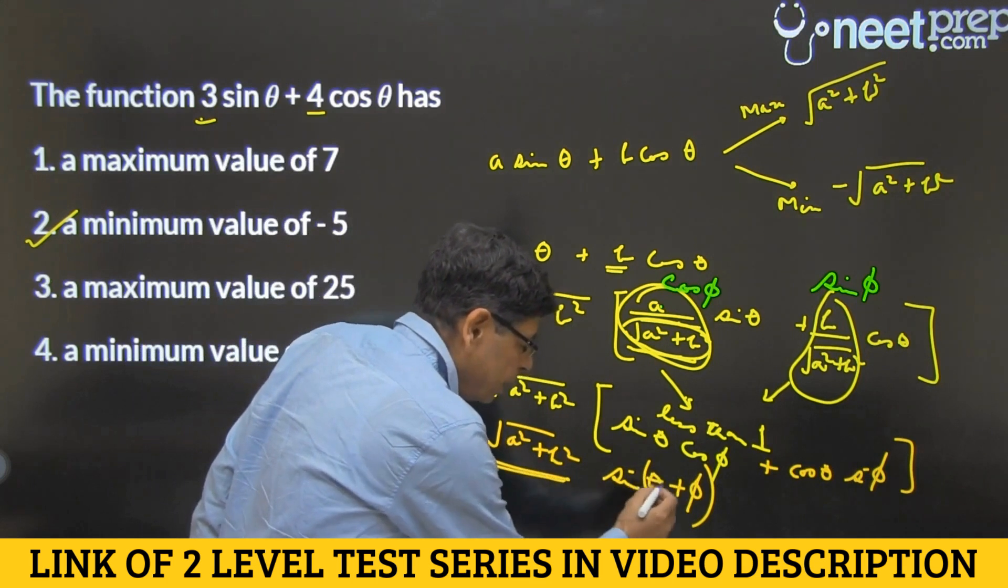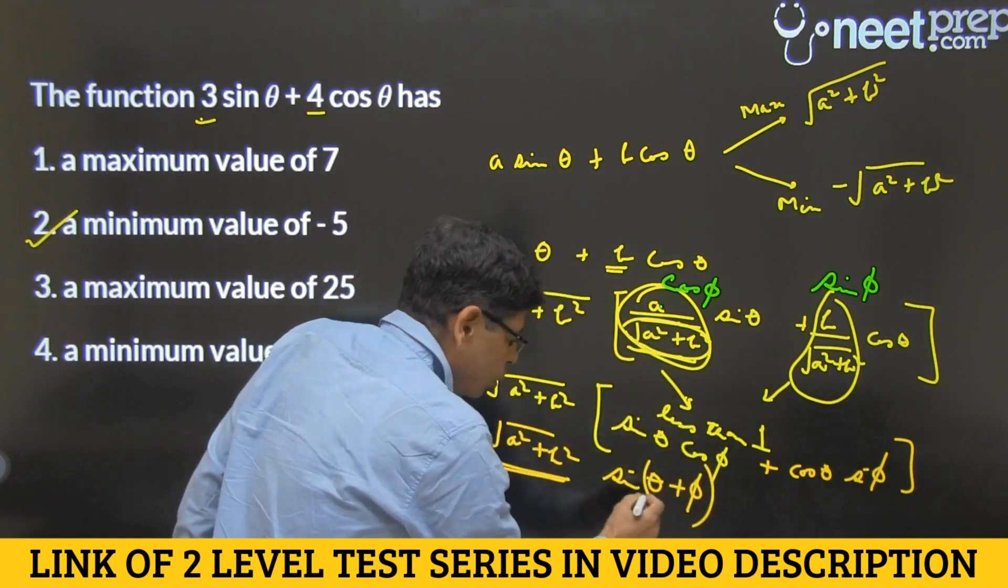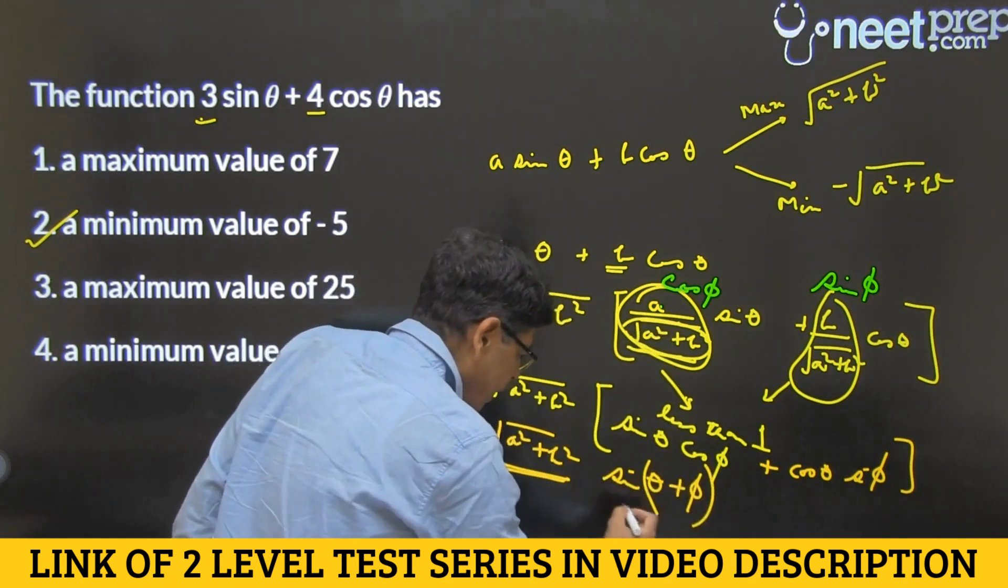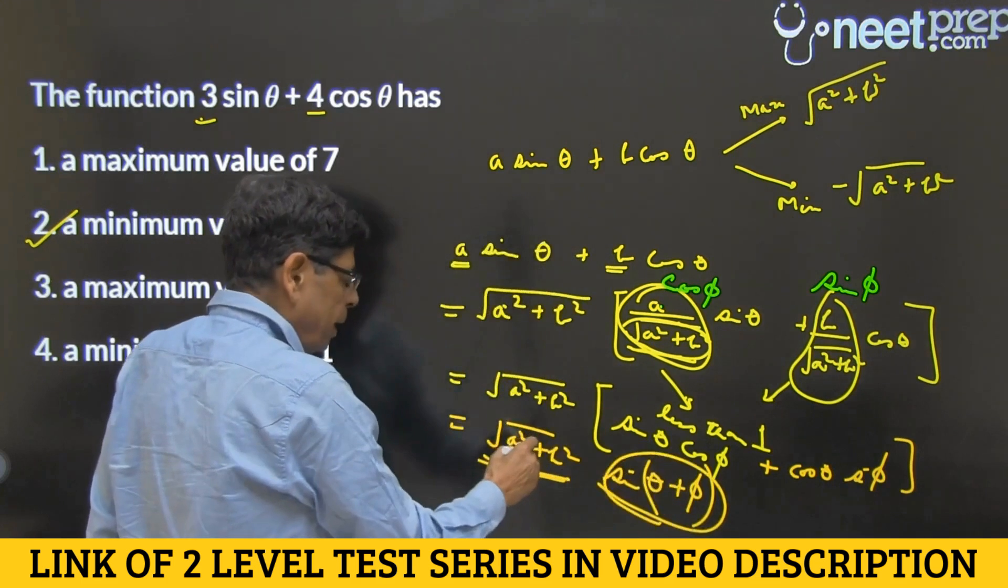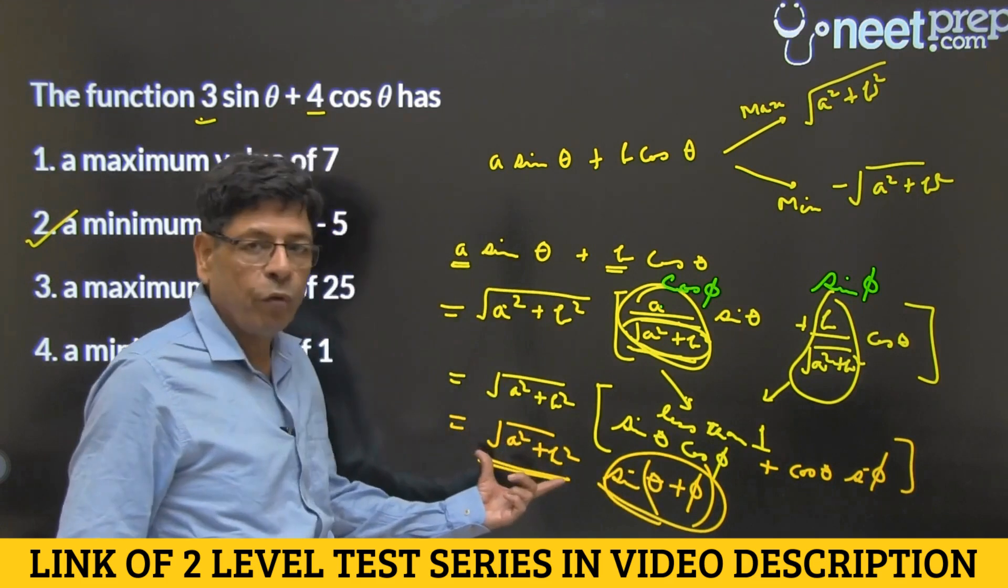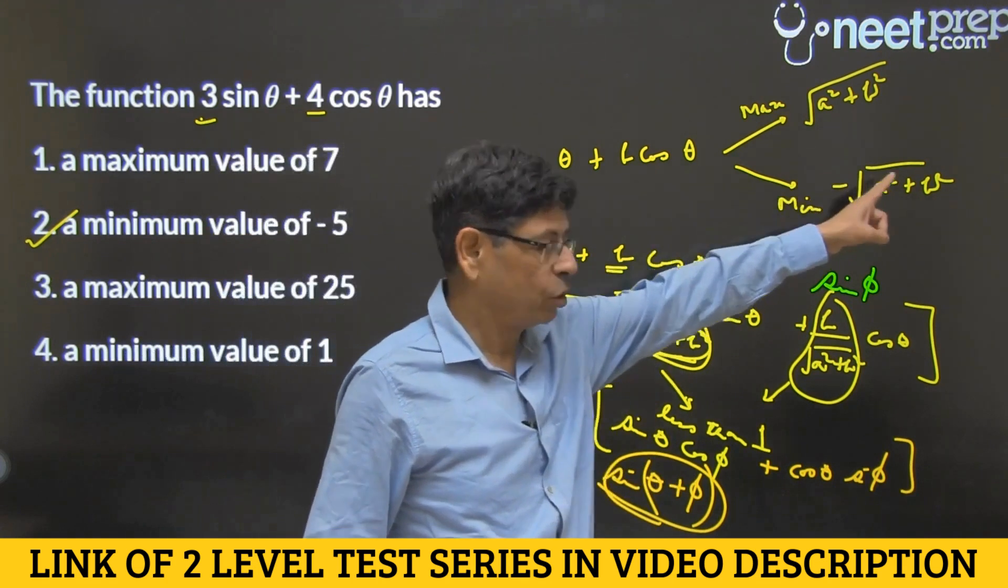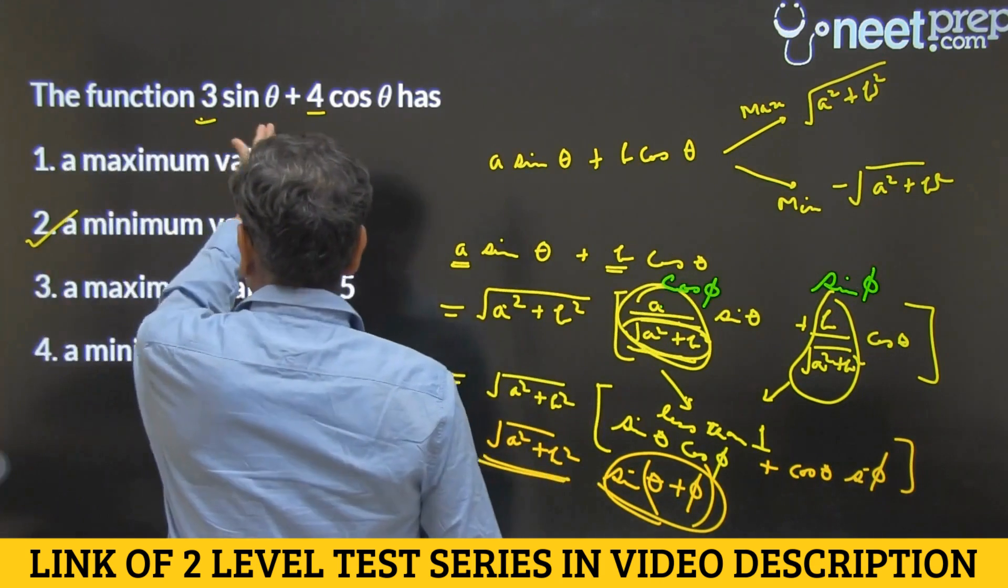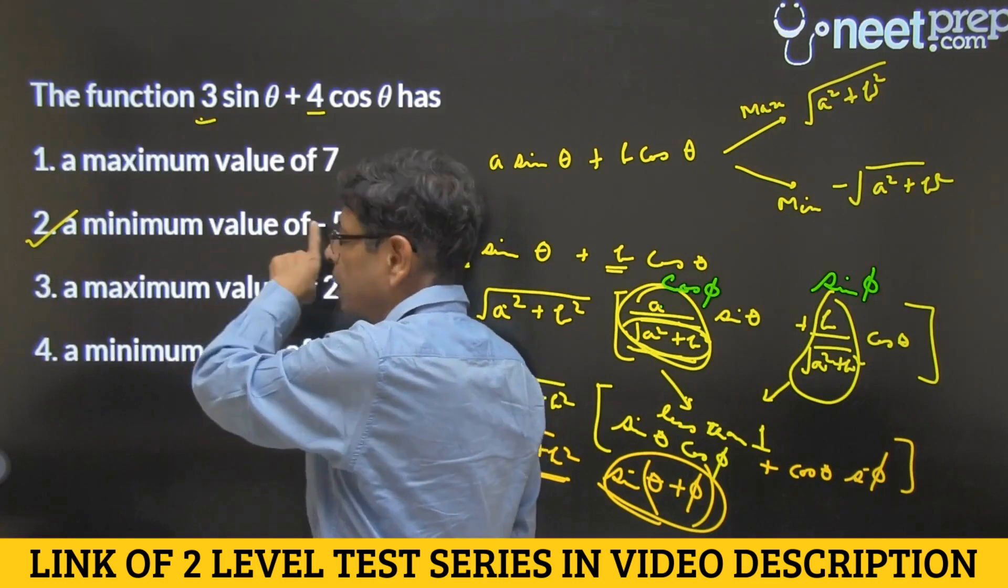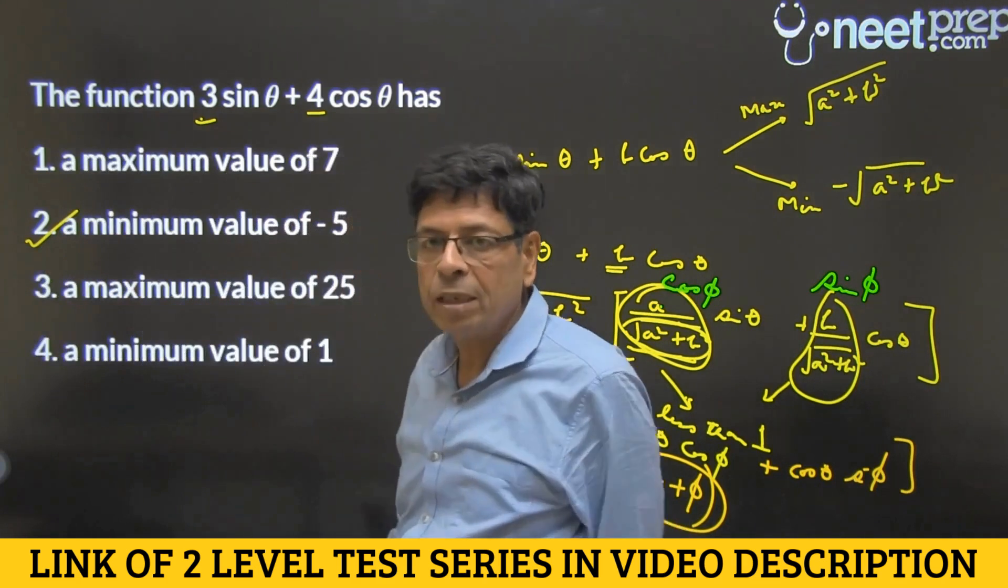And depending, θ is variable, φ is a particular number which is constant. So as θ varies, this function varies and it oscillates from -1 to +1. Multiplying by this, its maximum value will be √(A² + B²). And minimum value will be -√(A² + B²). In our case, it will be -5 because 3² + 4² under root is 5. And so, it has a minimum value of -5 as the answer.